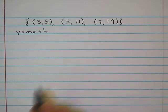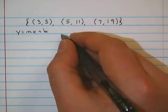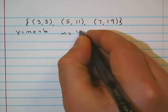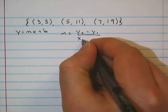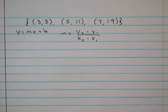So the first thing we need to do when given a list like this is we're going to calculate the slope. If you recall, slope is equal to y2 minus y1 over x2 minus x1.